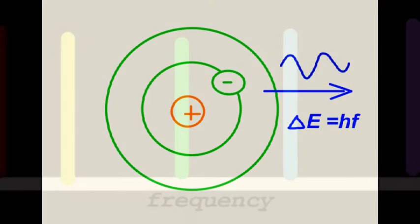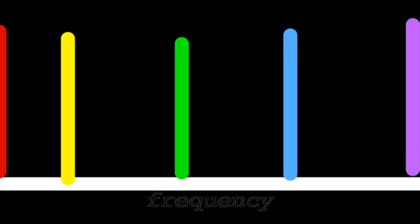So we can identify the element by the color of the light emitted. Different elements give rise to different colors.